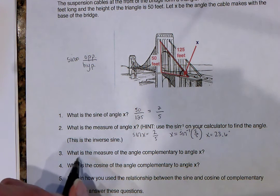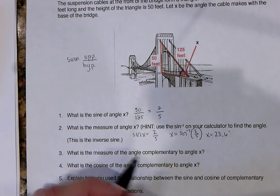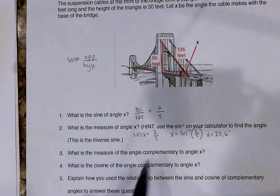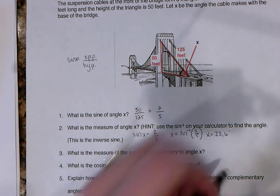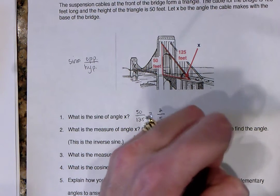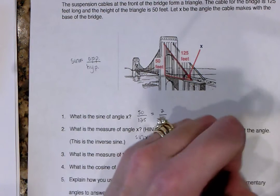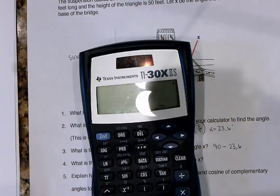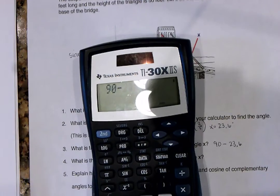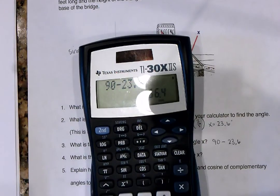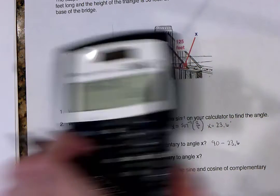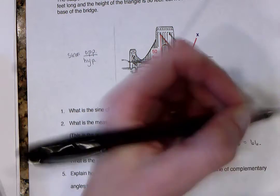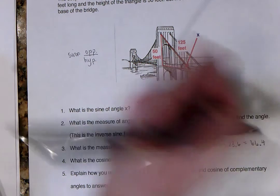What is the measure of the angle complementary to that? Well, if you remember, complement means they add up to 90. So if I do 90 minus 23.6, I'm going to get my answer. 90 minus 23.6 is 66.4, so that's my complementary angle.